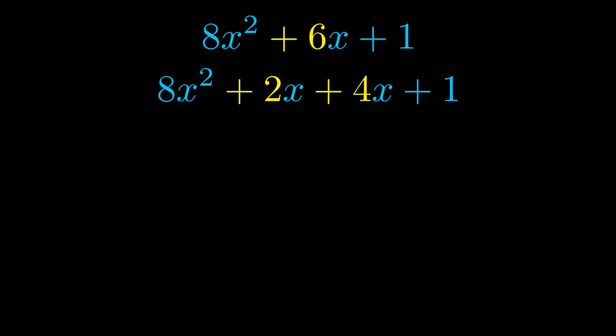Once we've done this we go ahead and put parentheses around the first term and the last term. And we do that so that we can take the greatest common factor out of both terms.